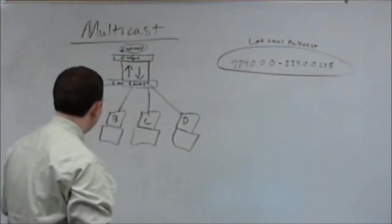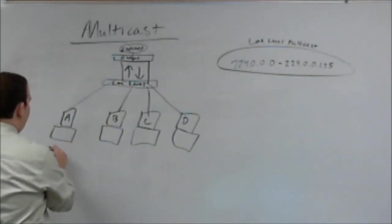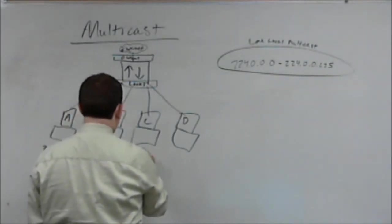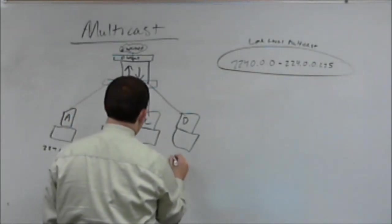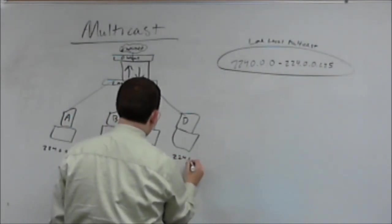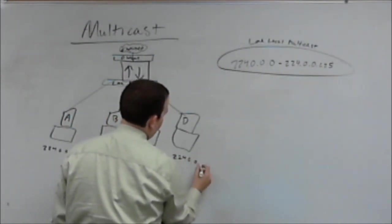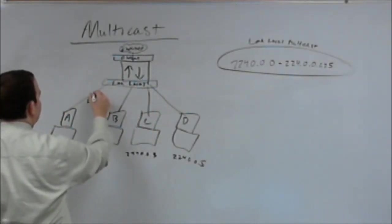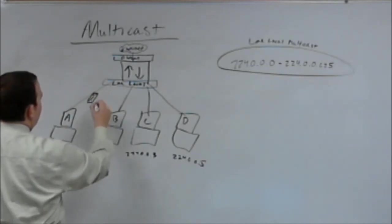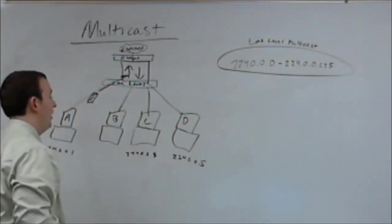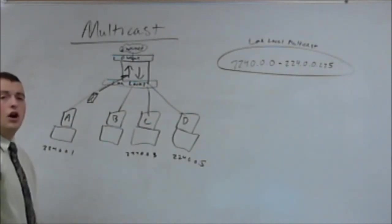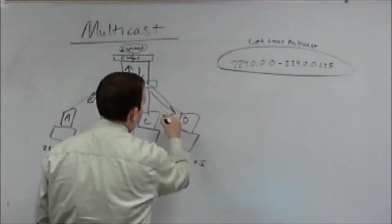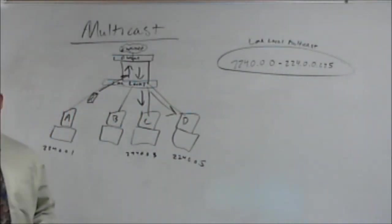So let's give host A a 224.0.0.1, C 224.0.0.3, and host D 224.0.0.5. Now when host A sends this multicast packet out, it's going to come up to the switch, and the switch is going to say, well, this needs to go to anybody on the link local multicast domain. So it's going to take and send that packet out to host C and host D, and it's going to arrive.